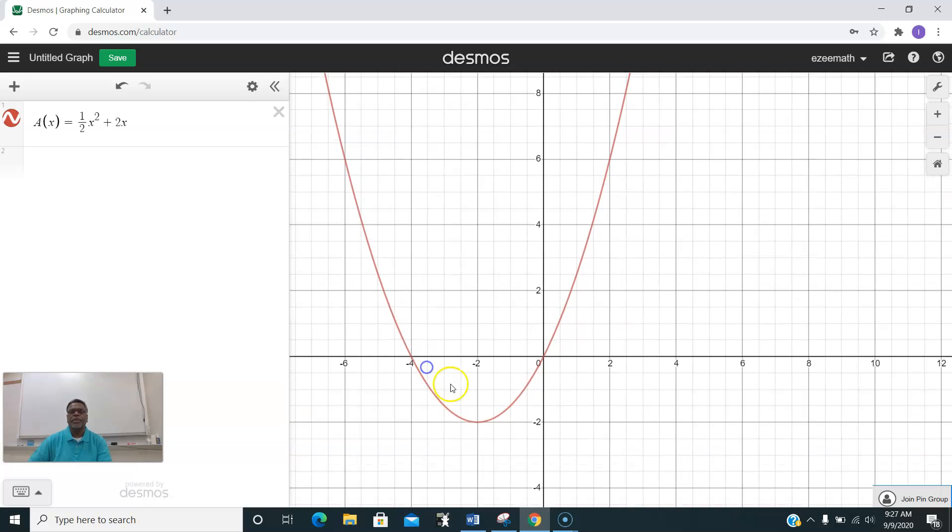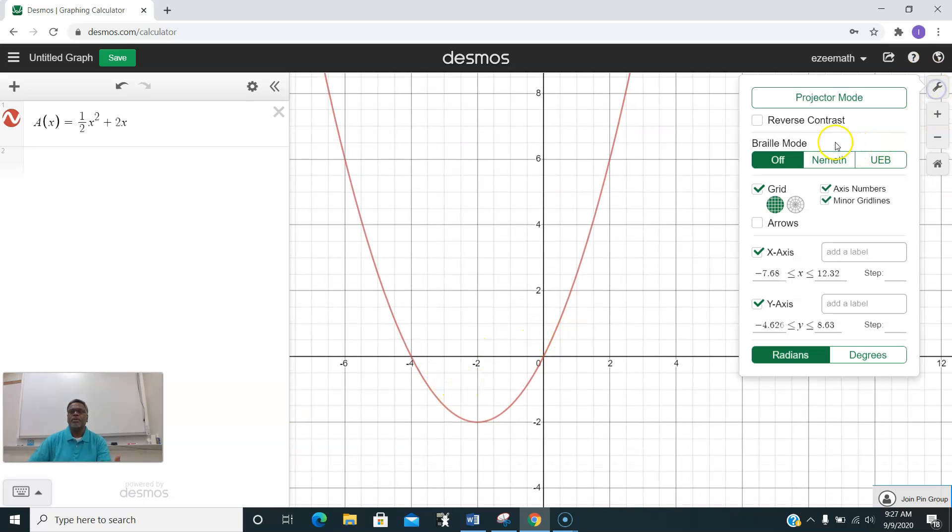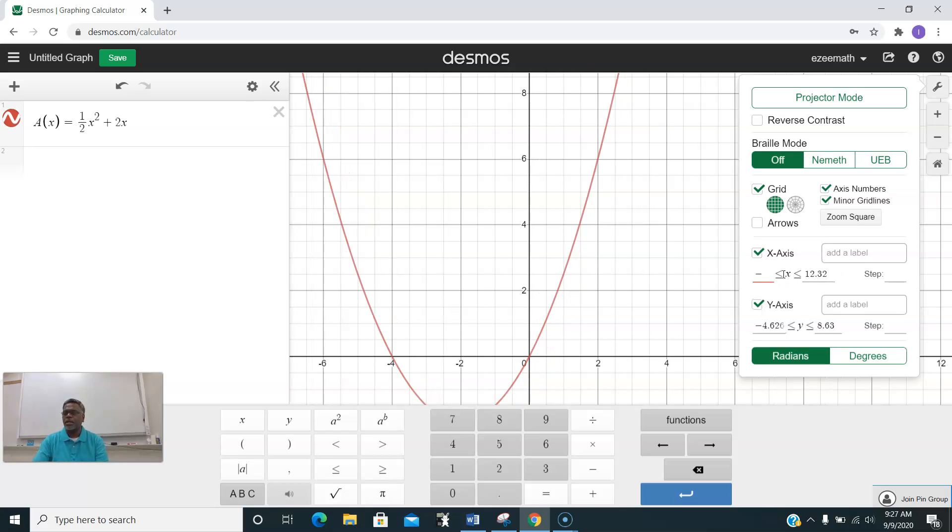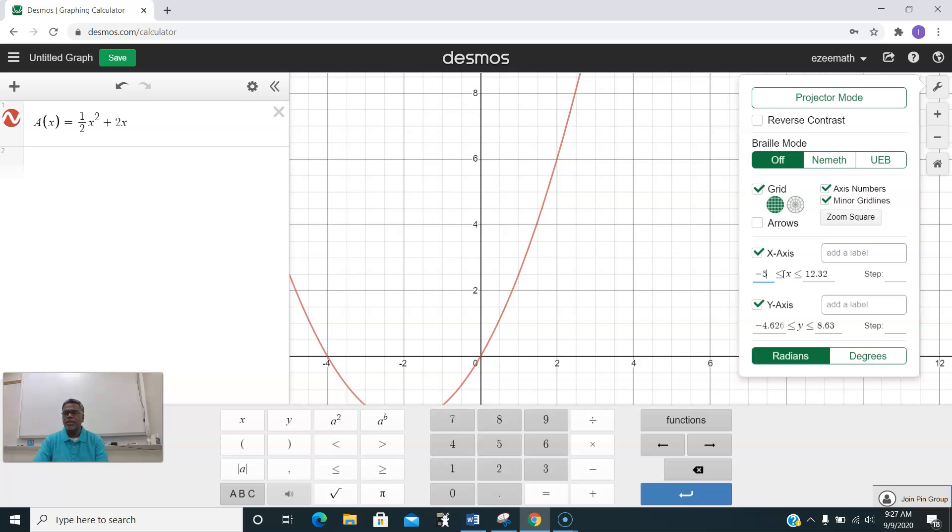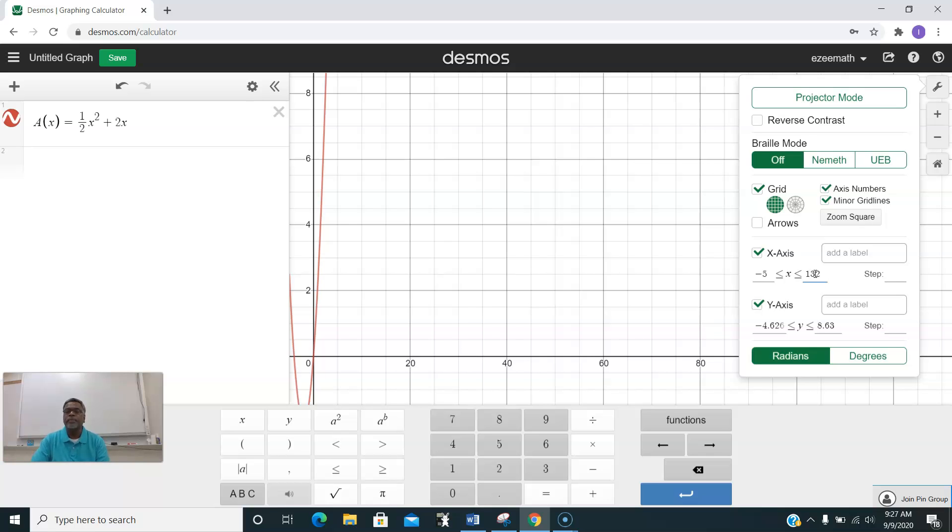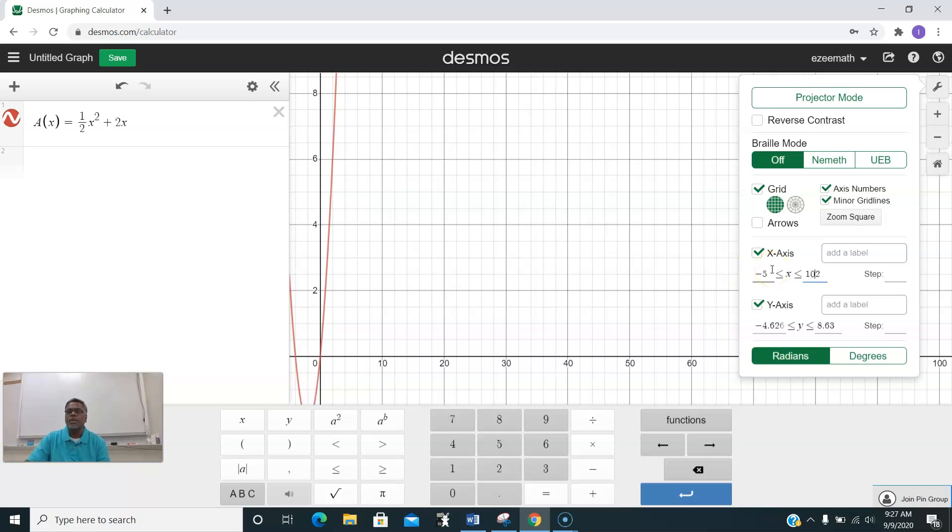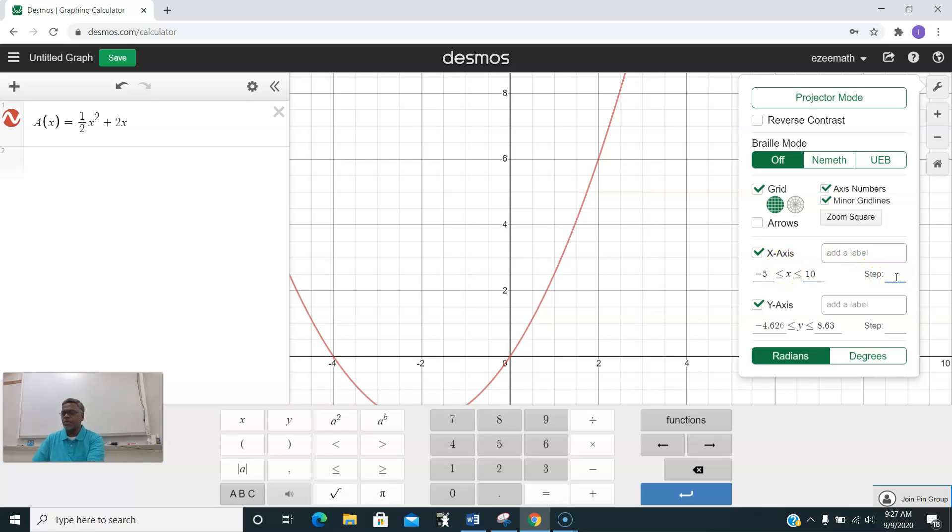Suppose your graph is not looking good, you can go to the settings and fix up those values. Just type in some suitable numbers. Here I want to make it better looking in this area. I'll take the x value from negative 5 to maximum x value 10 in steps of 1.